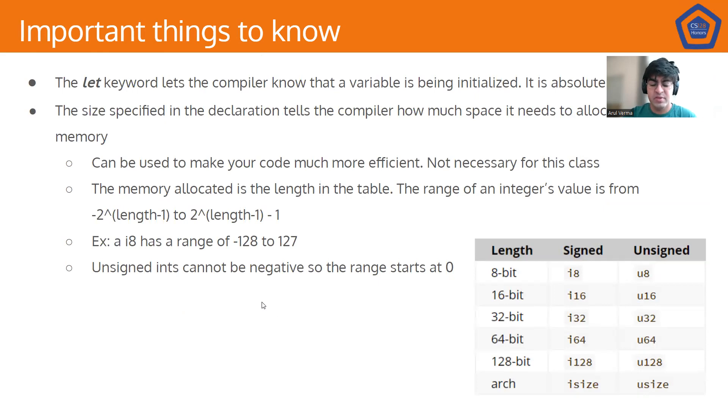Now, the other thing is that the size specified in the declaration tells the compiler how much space it needs to allocate in memory. And this makes your code significantly more efficient because you can optimize for your memory usage. The memory allocated is according to the length in the table. The range of the integer's value go from negative 2 to the power its length minus 1 to 2 to the power its length minus 1 minus 1.